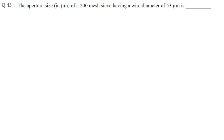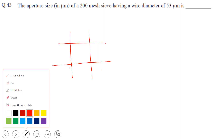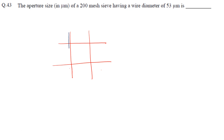The aperture size in micrometers of a 200-mesh sieve having a wire diameter of 53 micrometers needs to be determined. If you look at a mesh, it is made of wires arranged in a grid. These wires have a diameter of 53 micrometers. The aperture size is the opening between the wires. We are given 200 mesh, so we need to find the size of each opening.